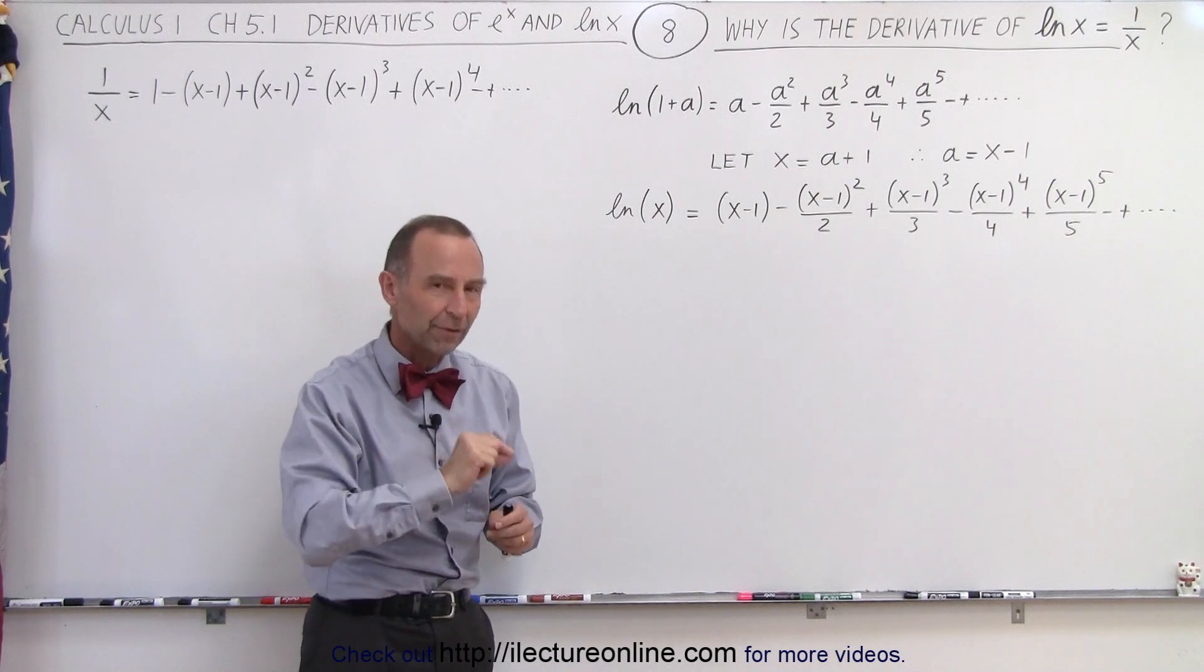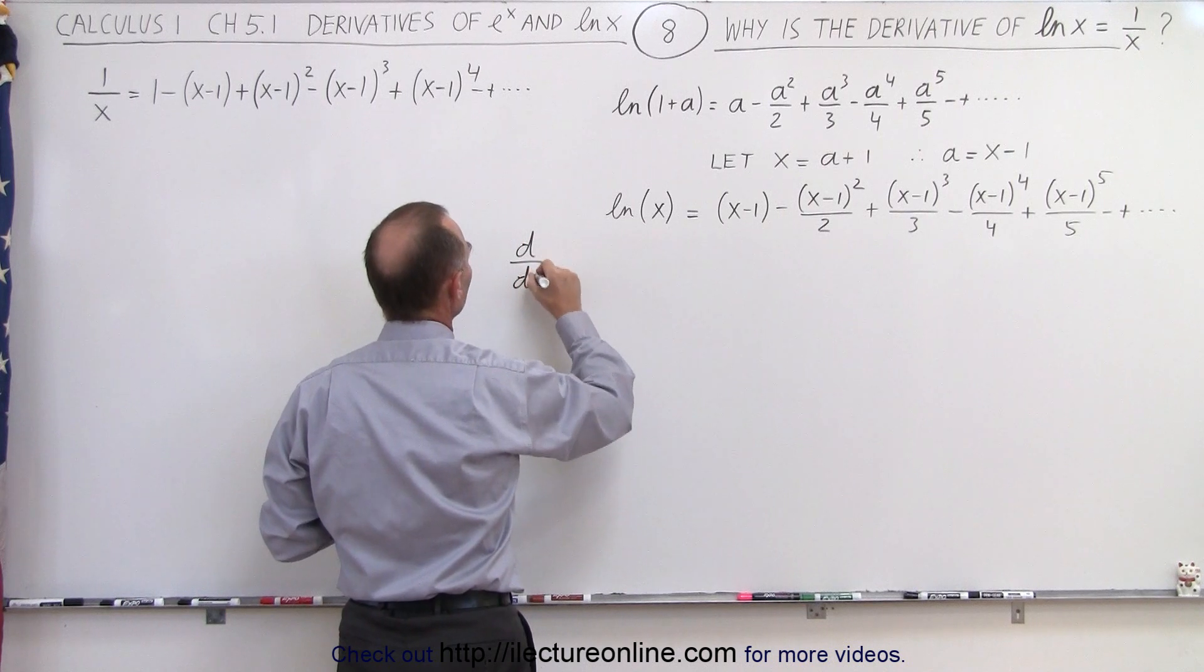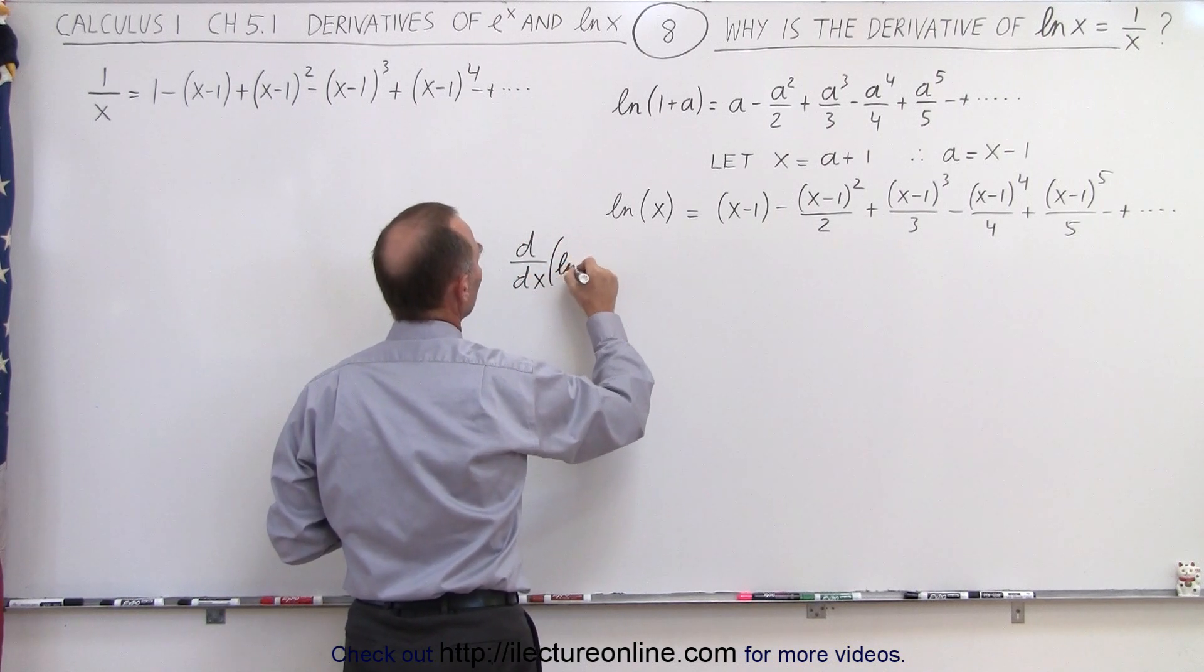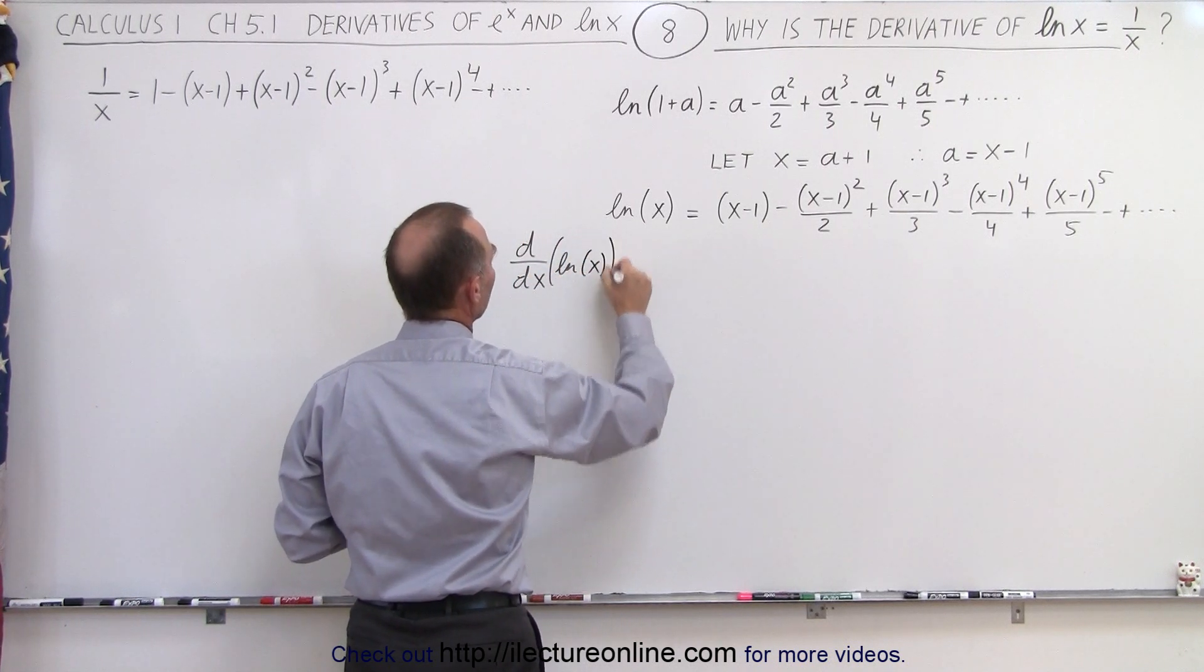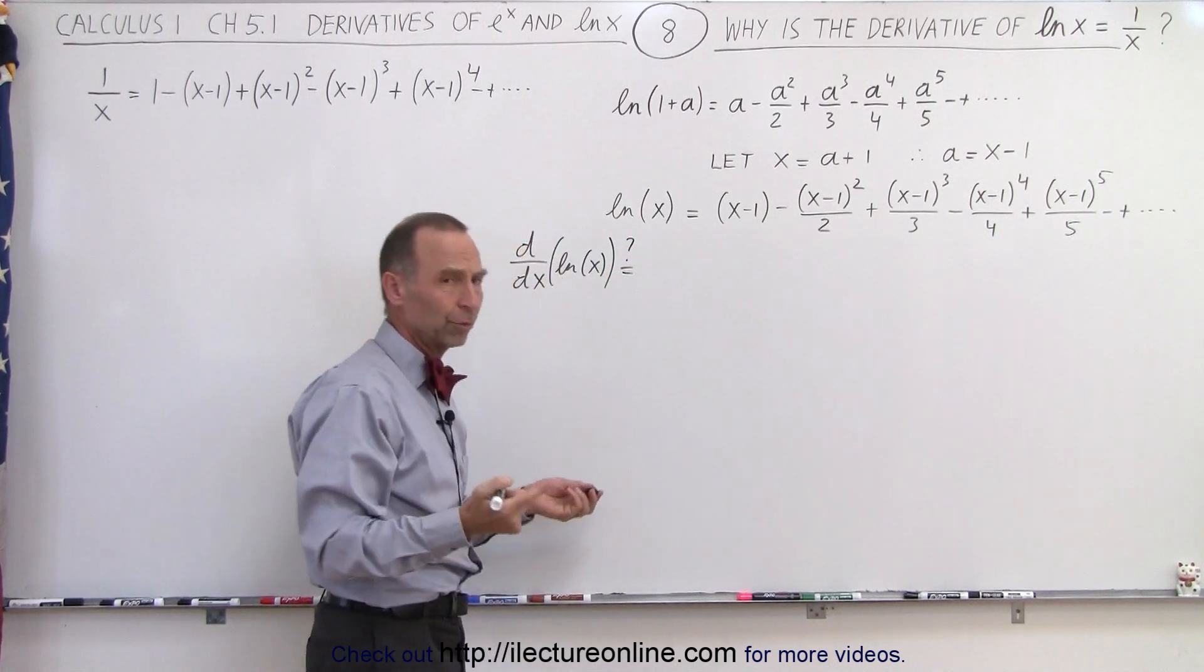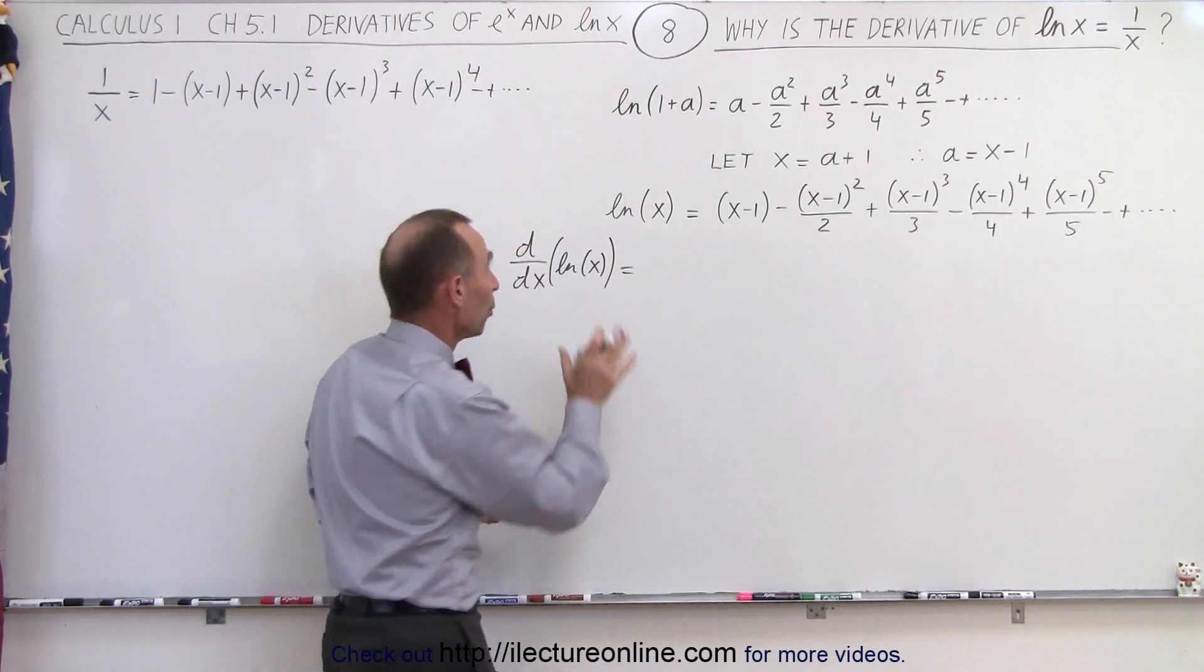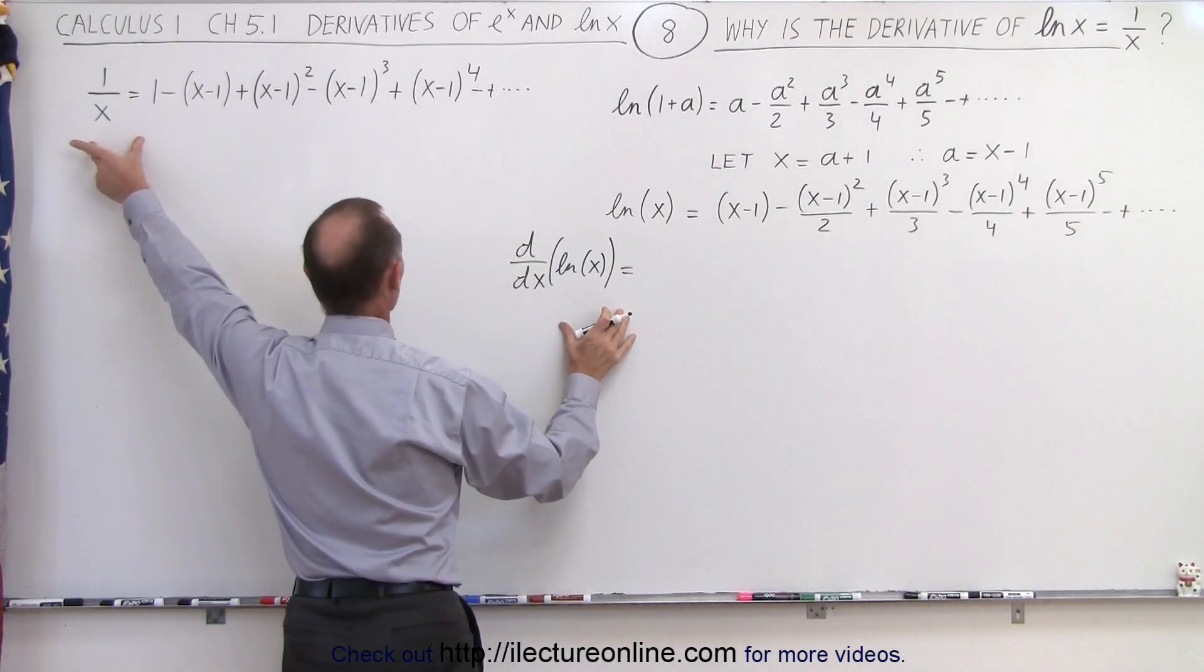Now we're going to take the derivative of both sides and see what we get. So we're going to take the d dx, the derivative with respect to x of the natural log of x, and that will be equal. Well, not presumably. It has to be equal, right? We don't need to put a question mark there. The ultimate question mark is, will this derivative be equal to 1 over x? That's the question mark.